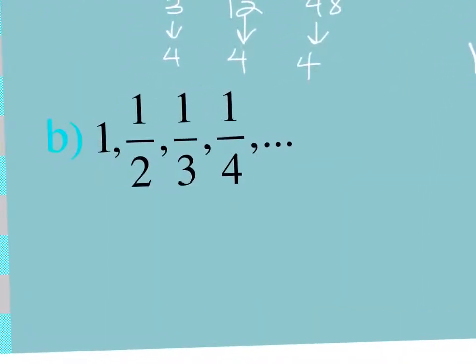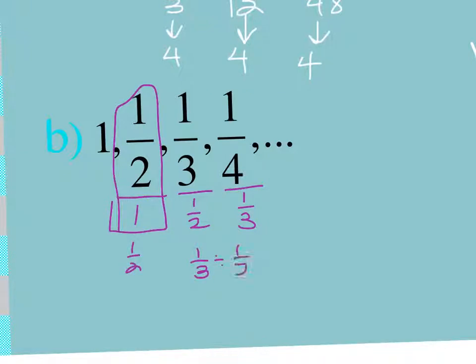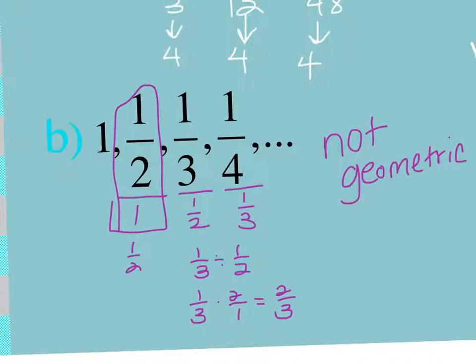Now look at B. I go from 1 to 1.5 to 1.3 to 1.4. So I would say, is 1.5 divided by 1 the same as 1.3 divided by 1.5? The same as 1.4 divided by 1.3. So 1.5 divided by 1. Hopefully that's easy. That's 1.5. 1.3 divided by 1.5 is the same thing as times 2 over 1. Is that 1.5? No. I don't even need to continue. As soon as I get 1 that doesn't match, this is not geometric. If that 1 was 1.5, but then the 1.4 divided by the 1.3 was not, it's still no. If any 1 in the series doesn't work, it's no. And be careful because they sometimes will give you, like, the first two work, but the third one doesn't. So you want to make sure you're testing them all out.